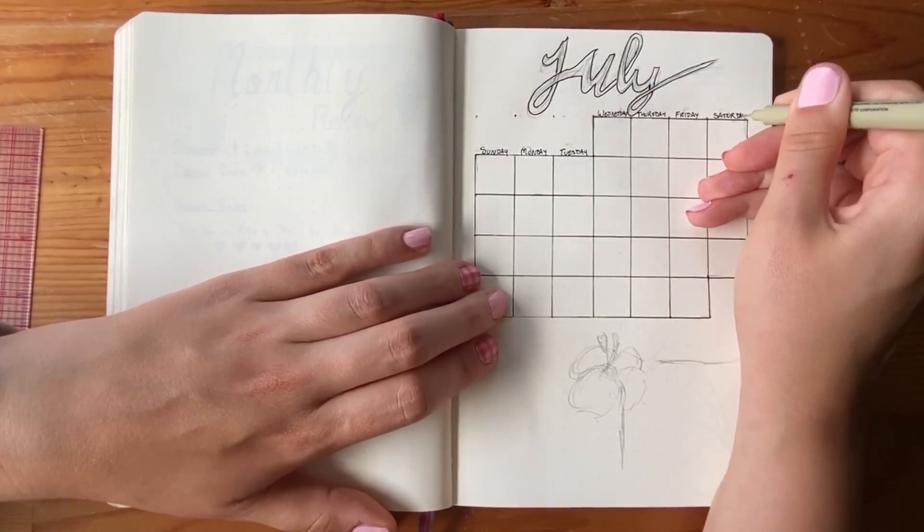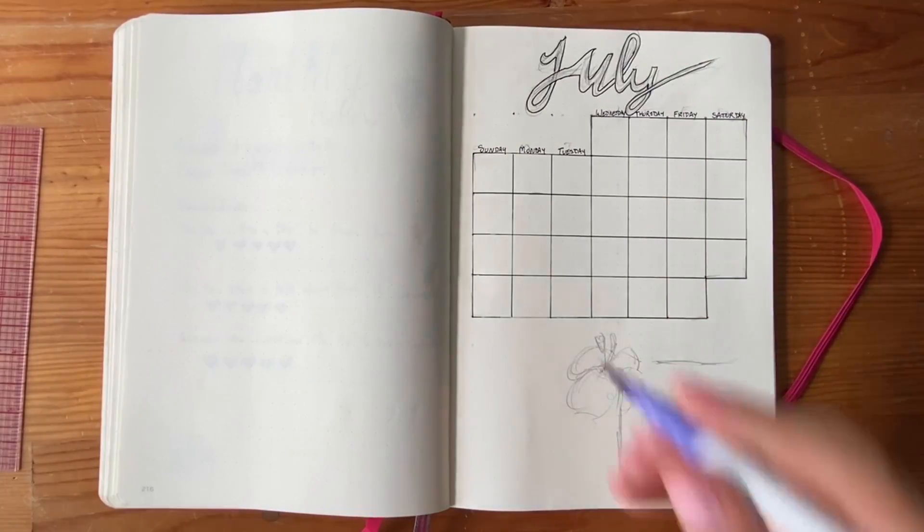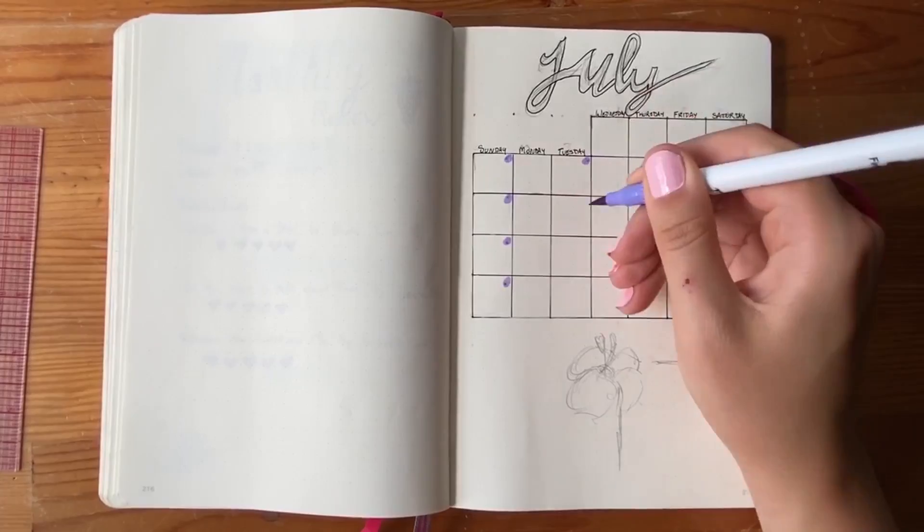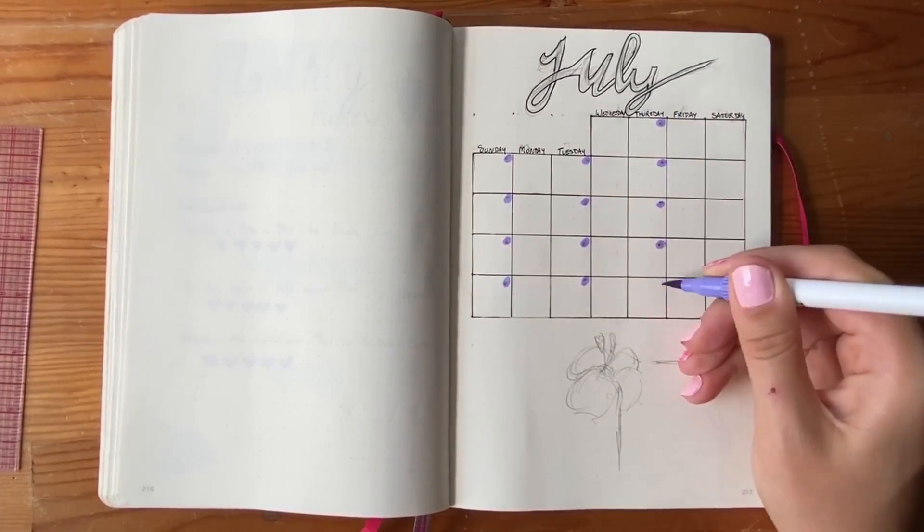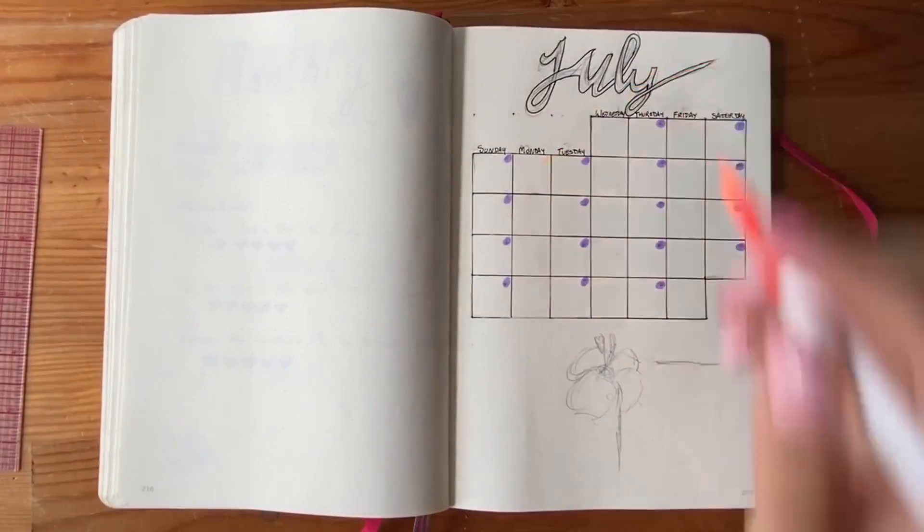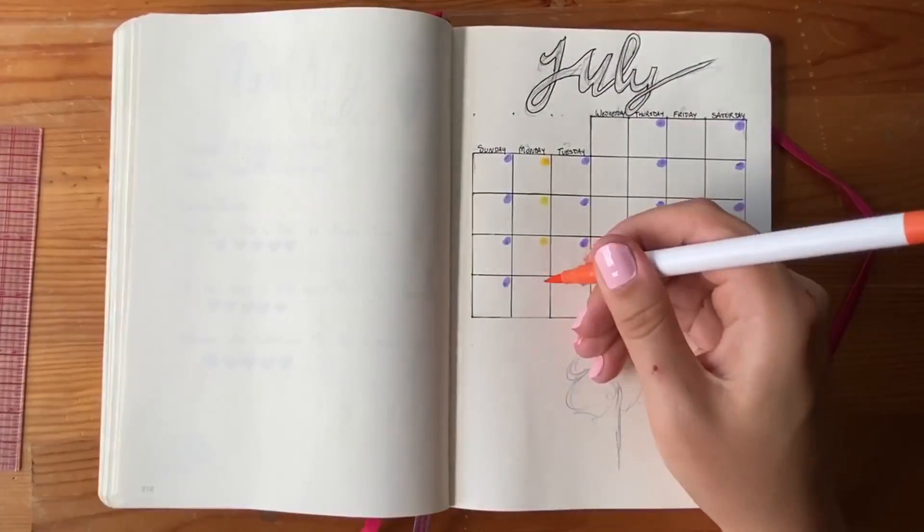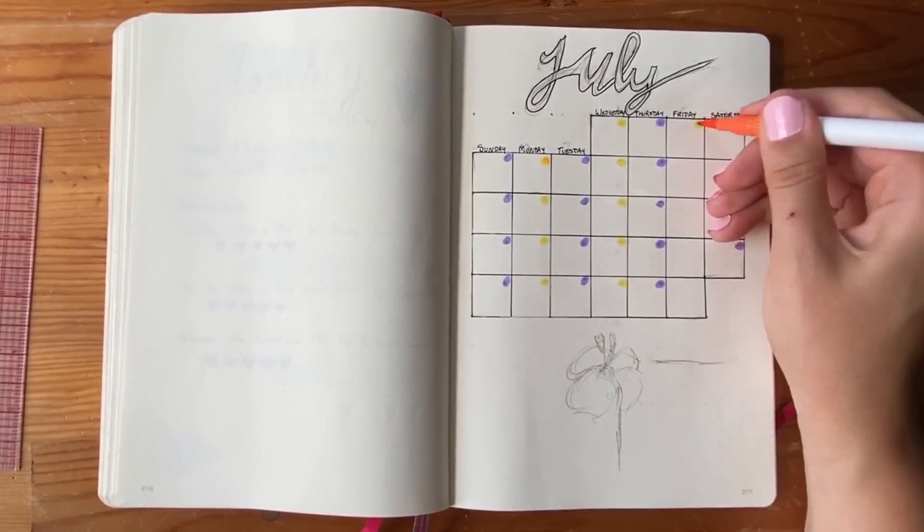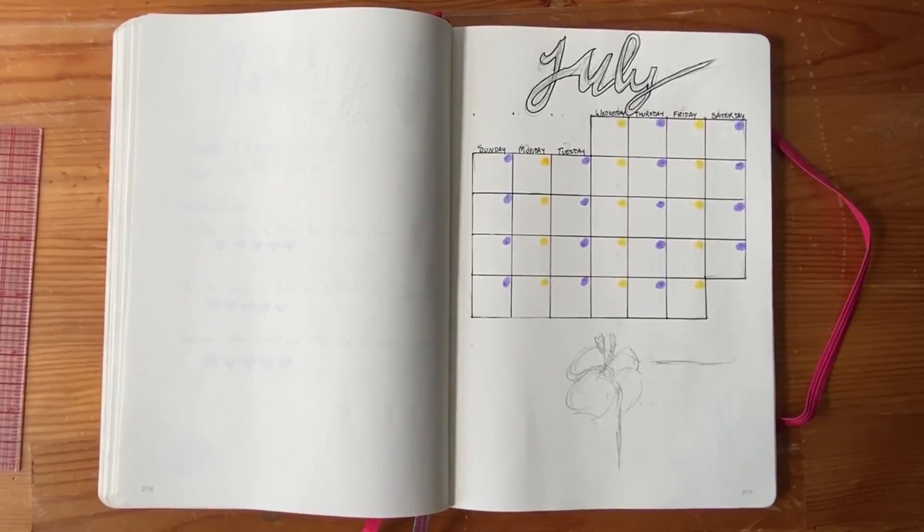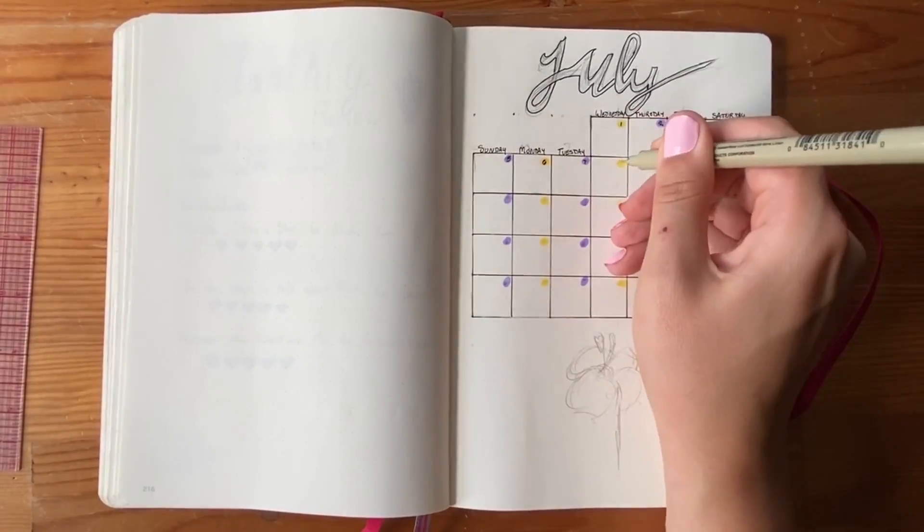So I'm just going ahead and writing the days of the week in here and then I'm going to add these colorful little circles that will fill in with the actual number days of the week. I didn't love this first orange color I picked so I found one that was a little more bold, but again we're bringing in that orange and purple color and we'll go ahead and number the whole calendar.